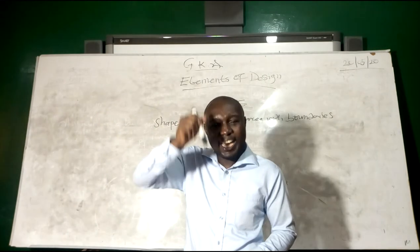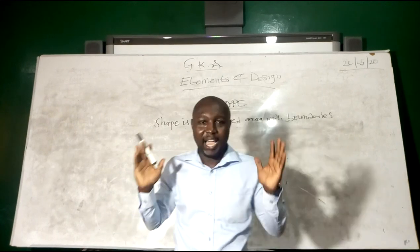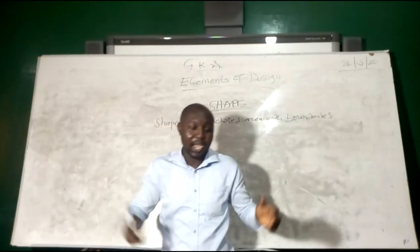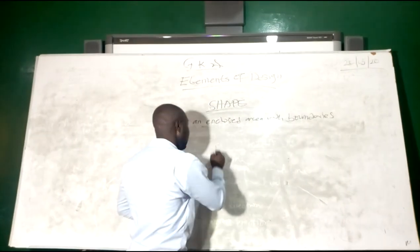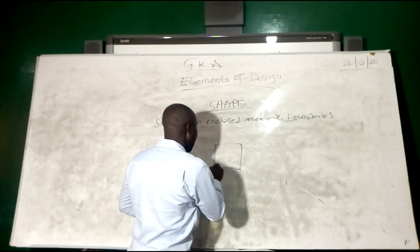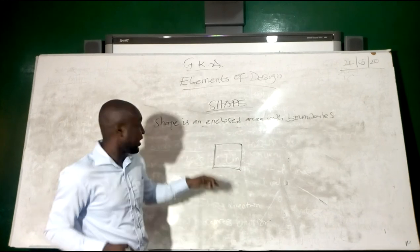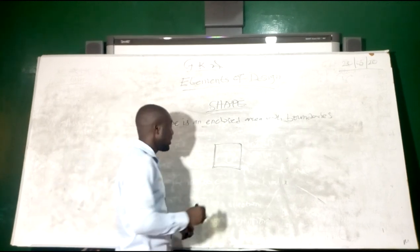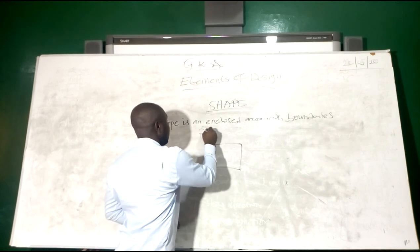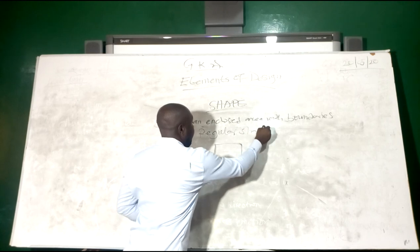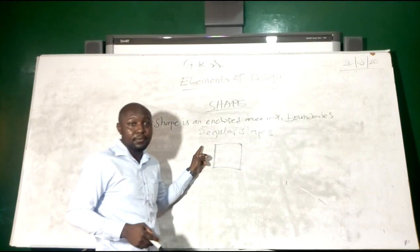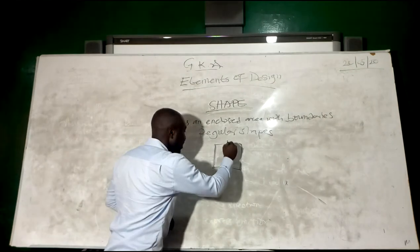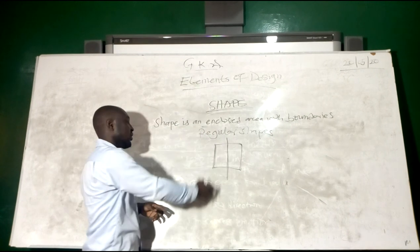Regular or formal shapes are shapes that have definite size and can be divided into two equal halves. Let's take a square for instance — it is a geometrical shape. They are enclosed with boundaries. Regular shapes have definite size and can be divided into two equal halves. So this square can be divided into two equal halves like this, because they have the same size.